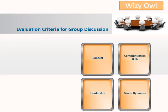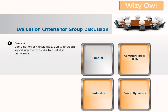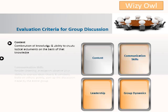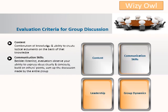Evaluation criteria for group discussions can be divided into four broad areas: content, communication skills, group dynamics, and leadership. Content is a combination of knowledge and ability to create logical arguments on the basis of that knowledge. Communication skills: evaluators observe your ability to express ideas clearly and concisely, building on others' points, and summing up the discussion. Group dynamics: evaluators observe participants' willingness to listen and discuss, ability to appreciate good points, and ability to disagree politely and summarize. Leadership: evaluators evaluate on the basis of who initiates the discussion, allows others to express their views, and channels discussions to a probable decision.